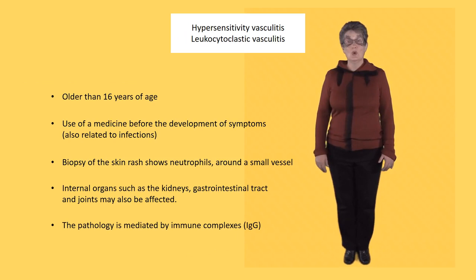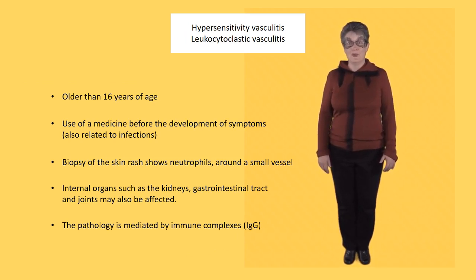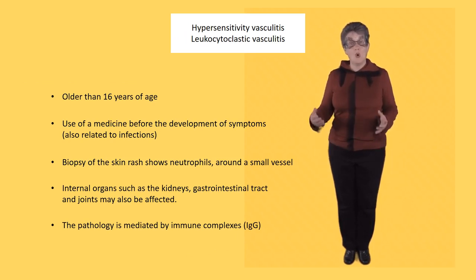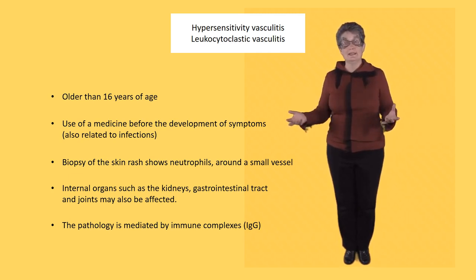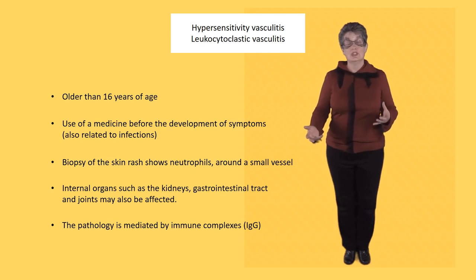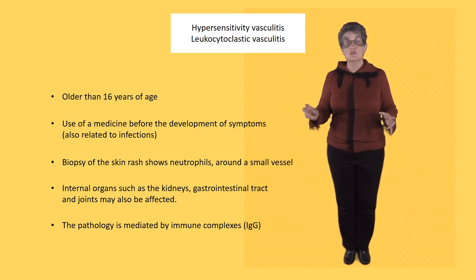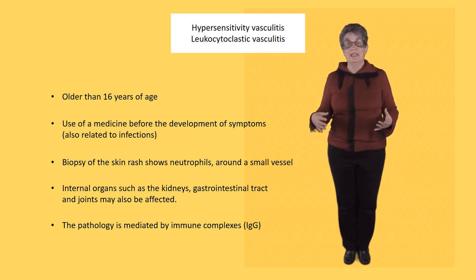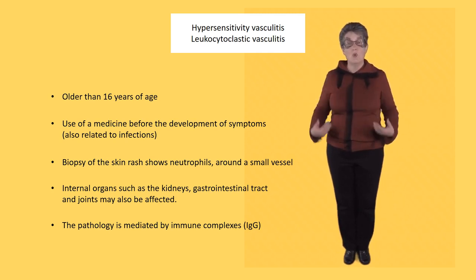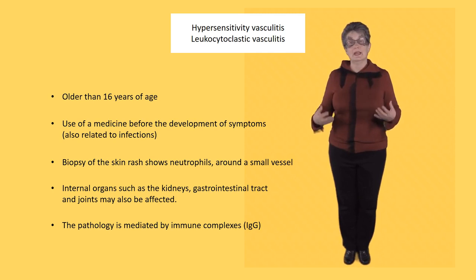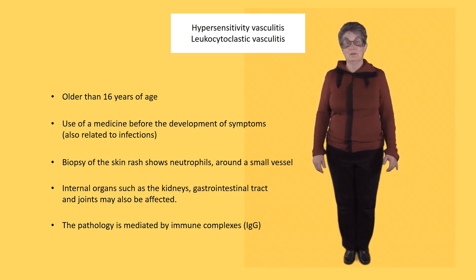Hypersensitivity vasculitis, also known as leukocytoclastic vasculitis, is also caused by an immune reaction. It happens in people older than 16 years old and is often associated with either use of a medicine or the presence of an infection that triggers this immune reaction. Biopsy of the skin rash shows neutrophils around a small vessel. It doesn't just happen in the skin — it can happen in the kidneys, GI tract, and joints, giving a wide range of symptoms. It's IgG deposition in the walls of capillaries that leads to this immune vasculitis.